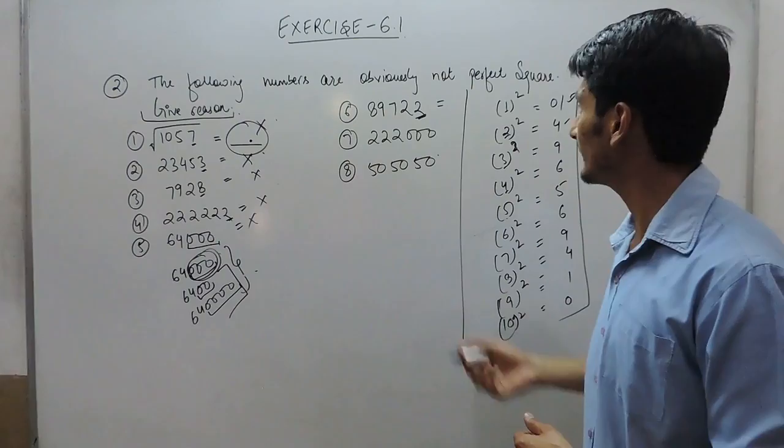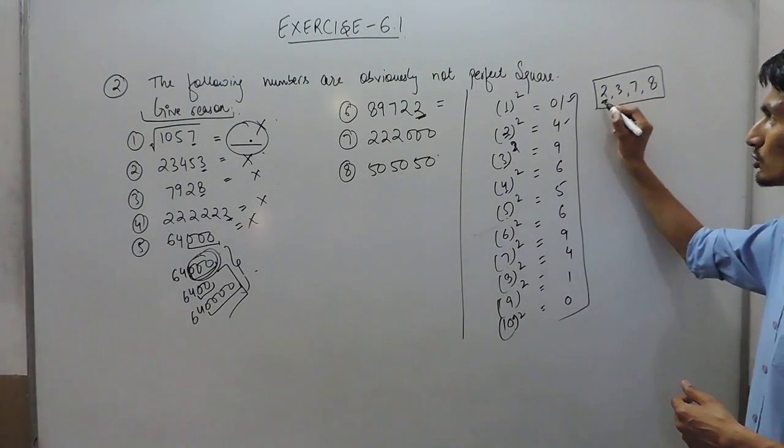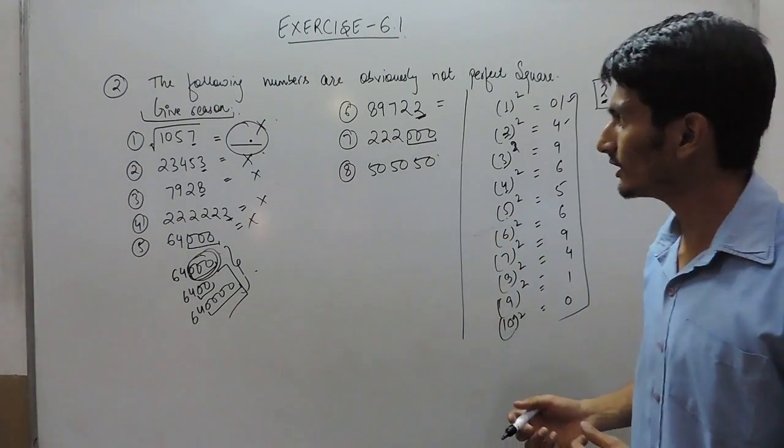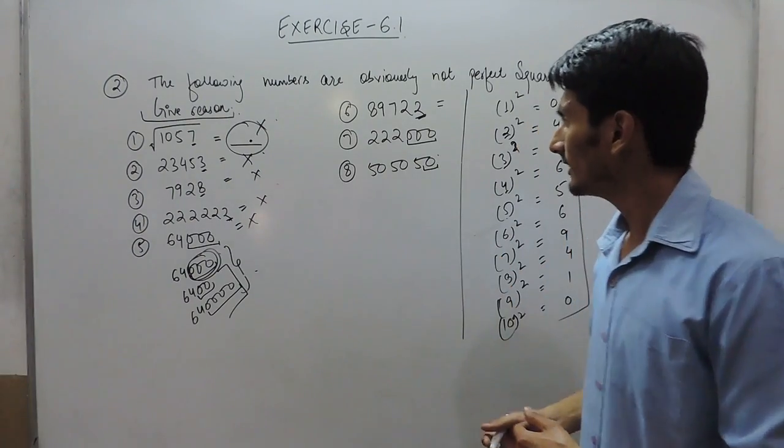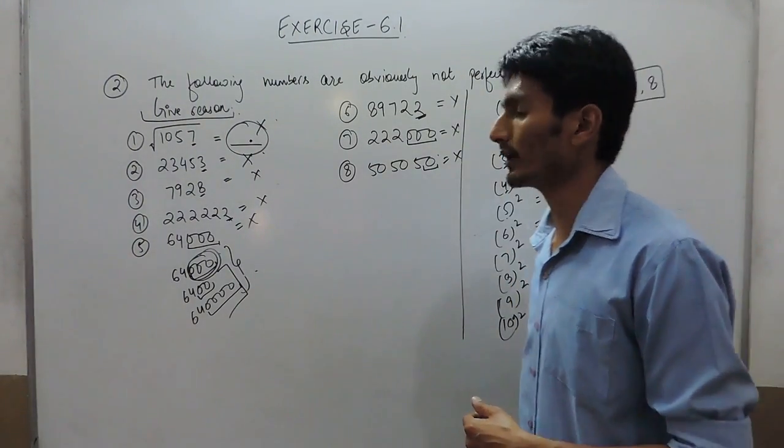In this case, the unit digit is 2, so any number whose unit digit is 2 cannot be a perfect square. Here again, there are an odd number of zeros at the end, so this cannot be a perfect square.